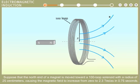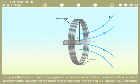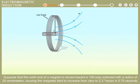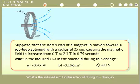Suppose that the north end of a magnet is moved toward a 100-loop solenoid with a radius of 25 centimeters, causing the magnetic field to increase from 0 to 2.3 Teslas in 0.75 seconds. What is the induced EMF in the solenoid during this change?